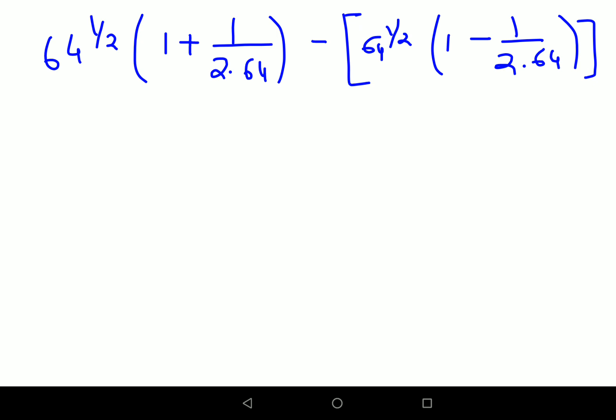We'll do 64 raised to 1/2, that is root 64, which is 8. Then you have 1 plus 1/(2×64). I'm just writing it as is because eventually things are cancelling, so I don't need to multiply 2 times 64. Here again, 64 raised to 1/2 gets you 8. There's a bracket inside, I will still write it in square brackets.